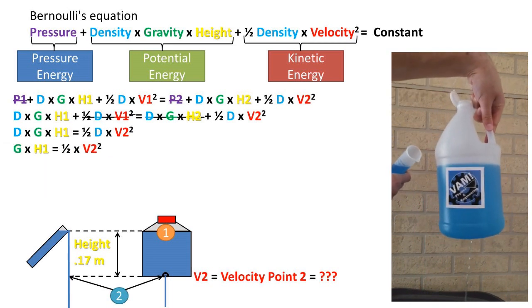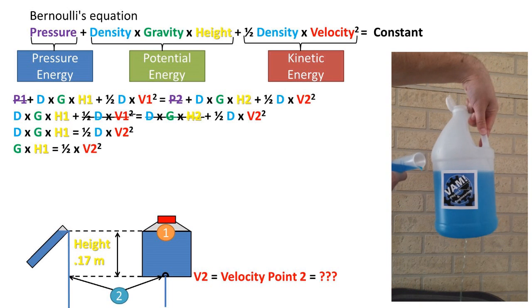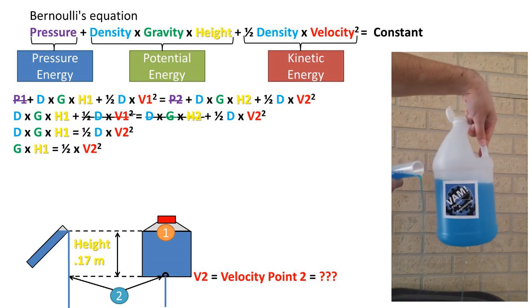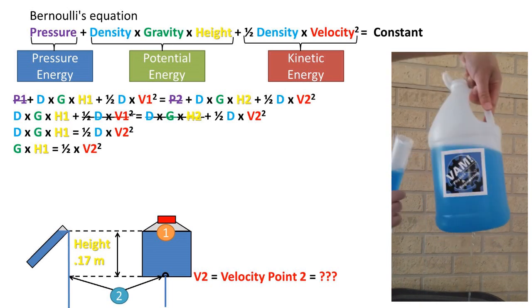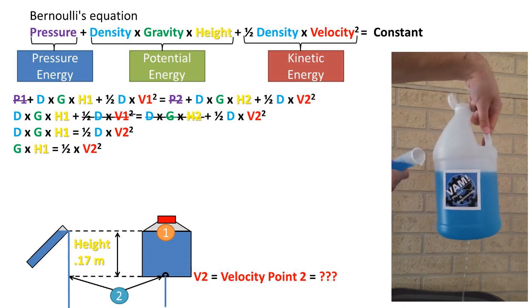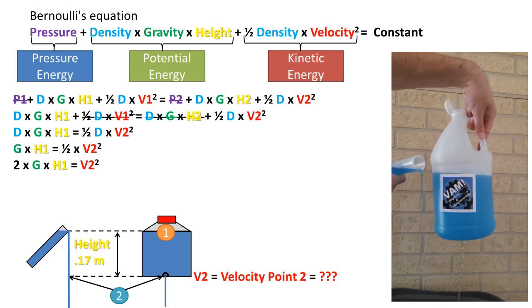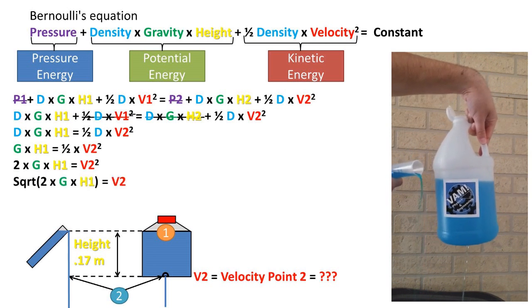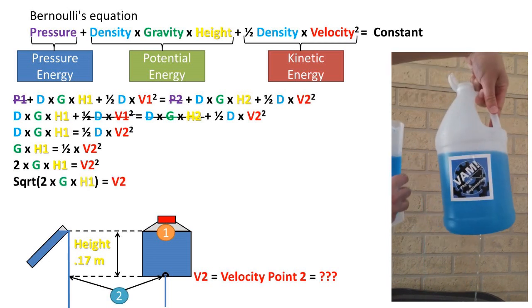Next, we notice that density is on both sides of the equation, so it can be cancelled out. Now we need to get velocity 2, which we are solving for, by itself on one side of the equation. We first divide both sides by one-half.